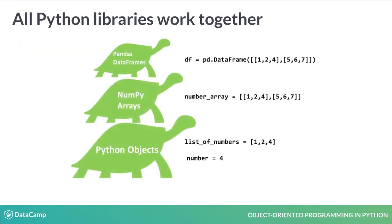How can we bridge these two concepts? Let's start at the bottom of the turtle. Everything in Python is an object, and the most powerful Python libraries we use every day include objects as building blocks. A variable is a Python object. A list is a Python object that's built out of variables. Here, we have a variable 4 that then becomes part of a list: 1, 2, 4. A list is an advanced type of object with advanced logic for how to access elements. At the second tier, we have numpy arrays, which are structured as lists of lists. We'll learn more about those in the next section.